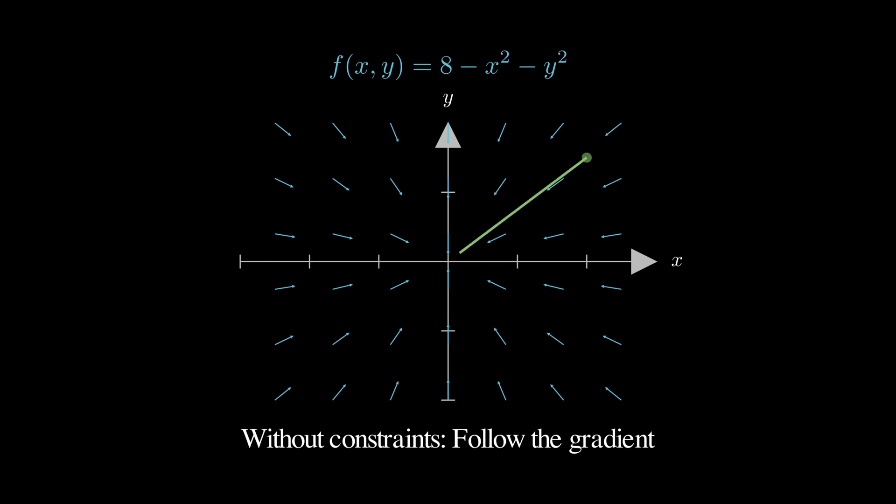If you start anywhere and keep following these arrows, you'll trace out a path that leads you straight to the peak, which for our function sits right at the origin where x equals zero and y equals zero.